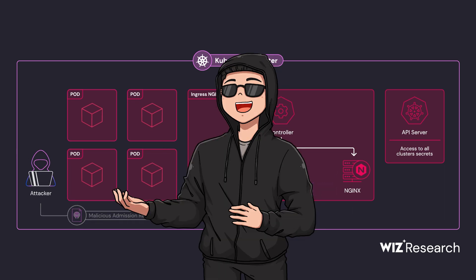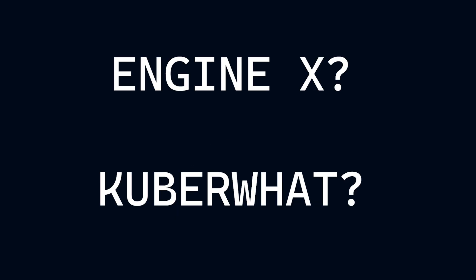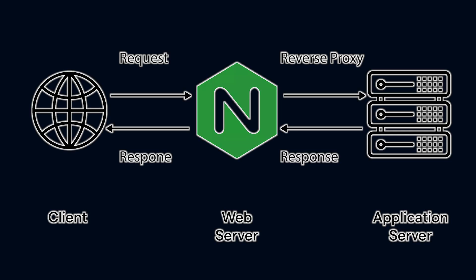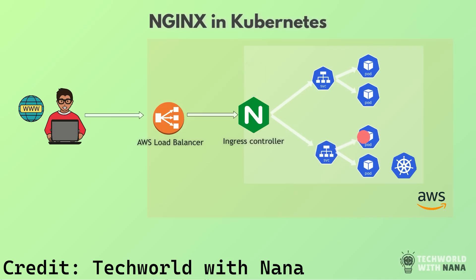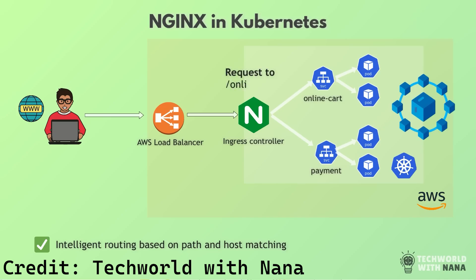Before we dig any deeper into the vulnerability itself, let's take a quick high-level look at how NGINX and Kubernetes clusters work. NGINX is a versatile web server known for its speed and efficiency. At its core, it handles HTTP requests, serves static content, and acts as a reverse proxy. This means it can receive external requests and route them to the appropriate backend services, balancing the load across servers. When Ingress NGINX is deployed in a Kubernetes environment, it becomes a primary gateway into your cluster, managing and securing the flow of traffic into various containerized applications.